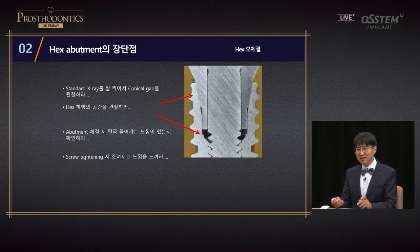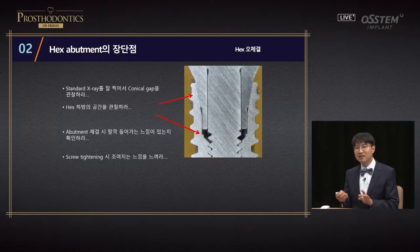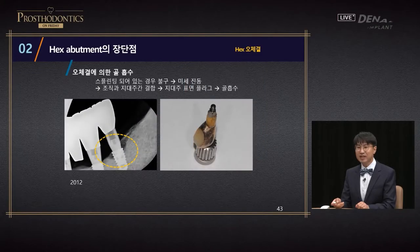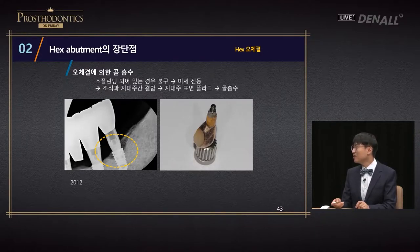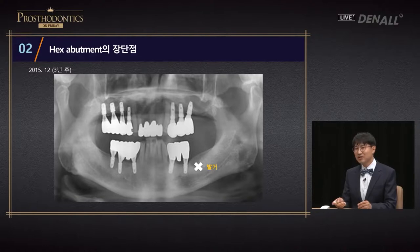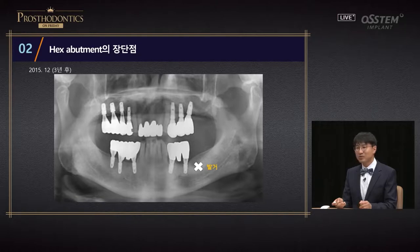Upon tightening, if it is wrong connection, there's a weird sense — the tightening sense is different. If you have done tightening with wrong connection, by doing screw tightening, you can tell the difference between correct and wrong connection. You need to figure out your own way in figuring out whether this is wrong or correct connection. In 2012, I made wrong connection with hex abutment and found it out too late. Bone loss occurred and in the end this implant had to be removed. If there's a bit of bone loss, I think the best way is to remove the implant and place it again. After three years, there was no need to place additional implants.